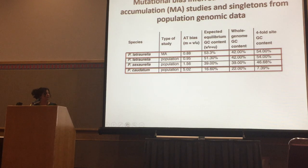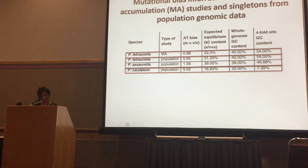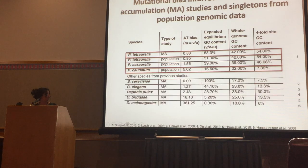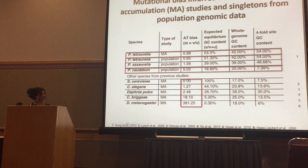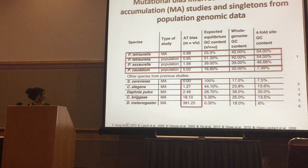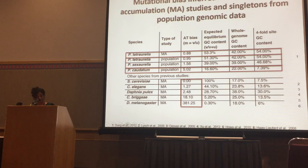Looking at previously done mutation accumulation studies from other species and calculating the same values, we see two really interesting things: in mitochondria, the mutation bias can be entirely GC-biased or entirely AT-biased — very strongly in either direction. Also, closely related species can have different AT biases, suggesting it is possible for the AT bias to have decreased around the Paramecium aurelia complex.